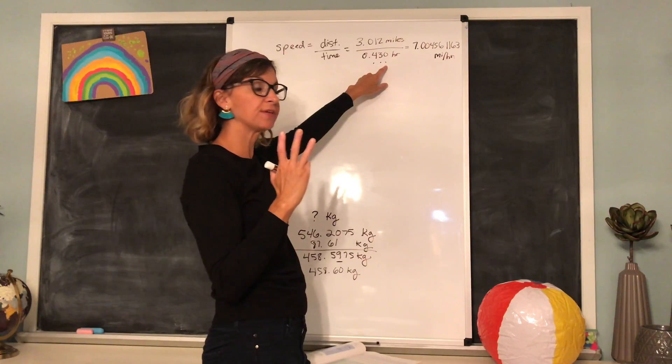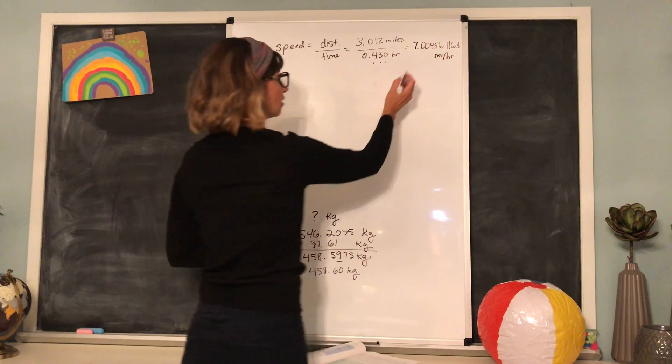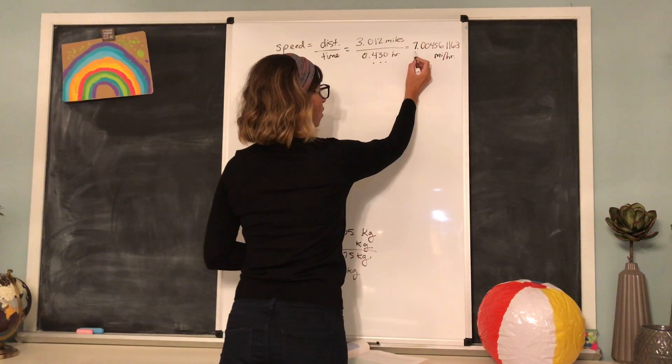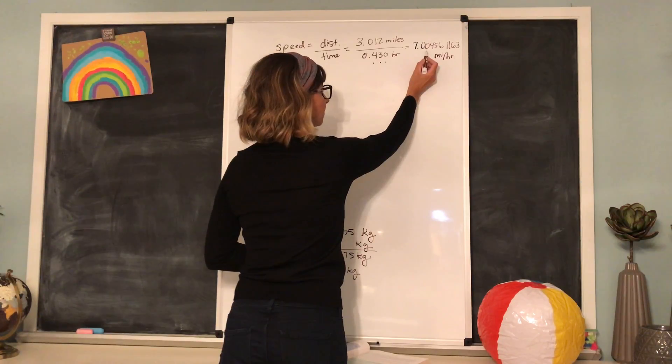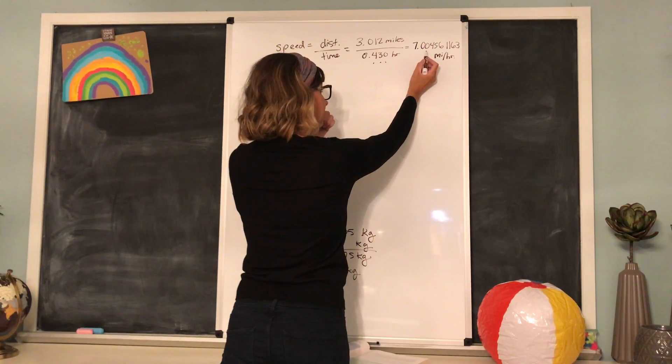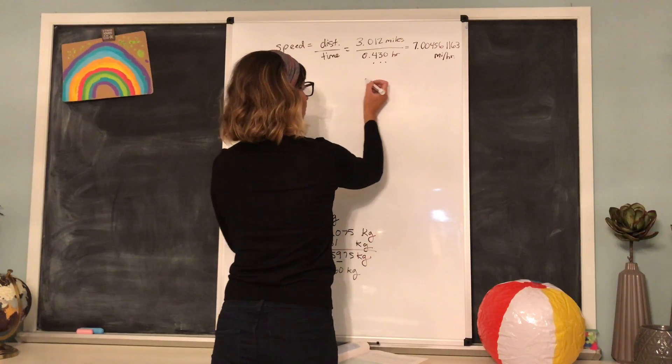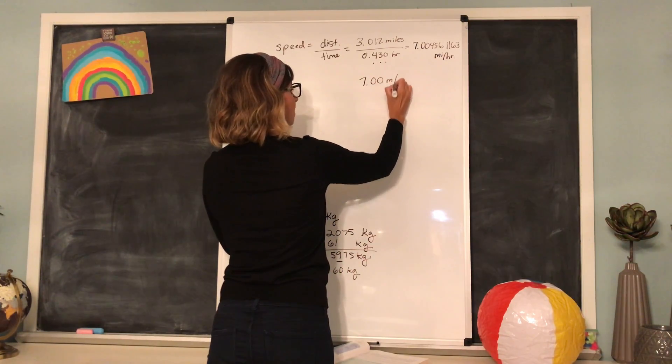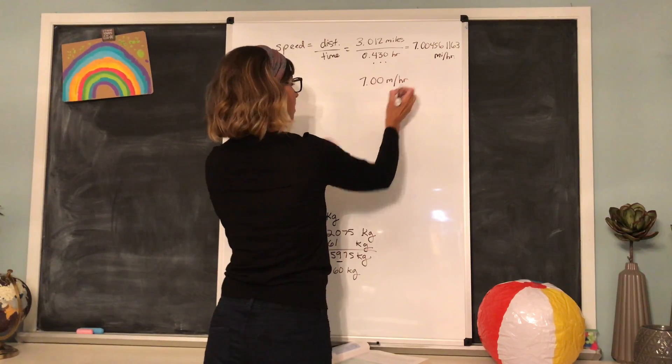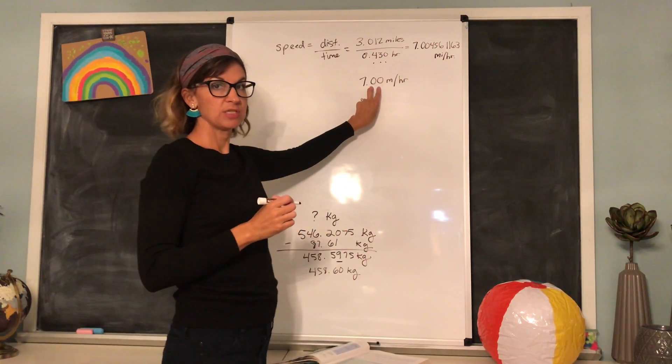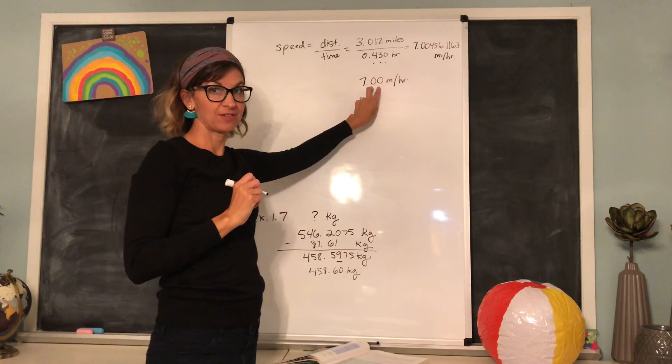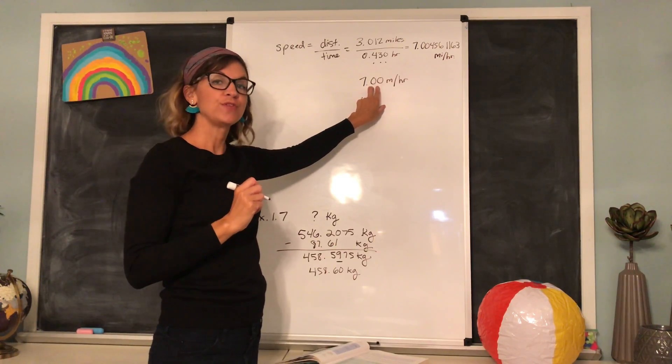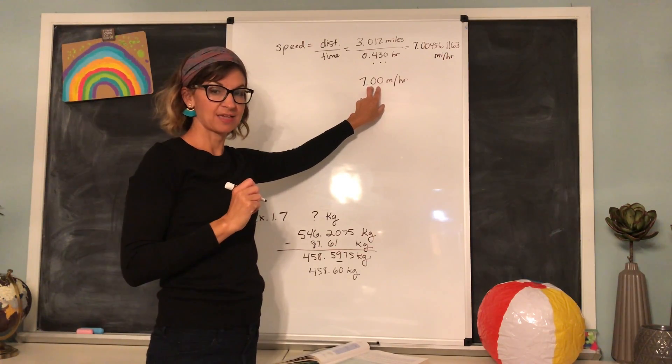Over here, we are going to count out one, two, three significant figures. The four does not round up this zero right here. So the answer ends up being 7.00 miles per hour. Remember, these two zeros are significant figures. If you forgot why, review your rules that I gave you last time.